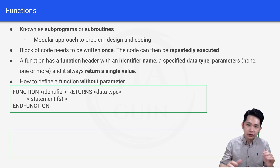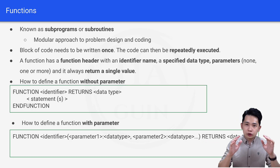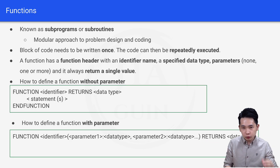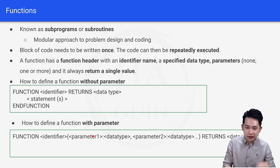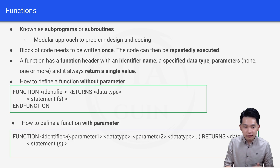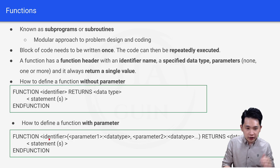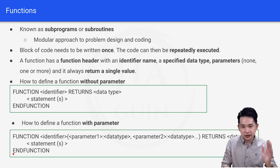To define a function with parameters, the first line is: FUNCTION identifier(parameter1 : data type, parameter2 : data type, ...) RETURNS data type. This looks quite similar to the function without a parameter — the difference is the extra brackets with parameter names and their data types. The body contains the statement and finishes with END FUNCTION. Remember, the statement is always indented inside the function, while FUNCTION and END FUNCTION share the same indentation.